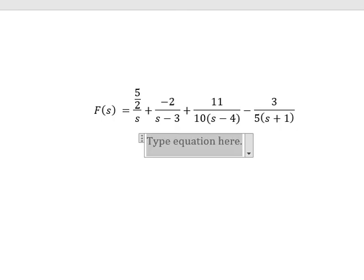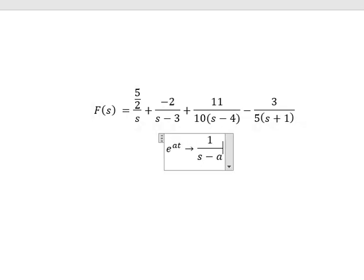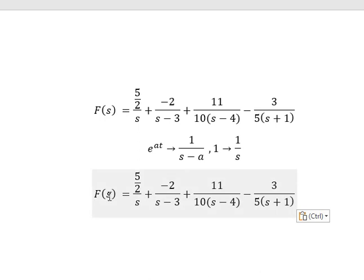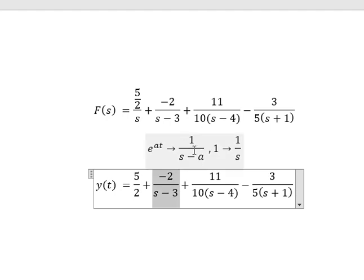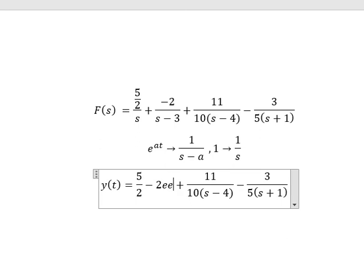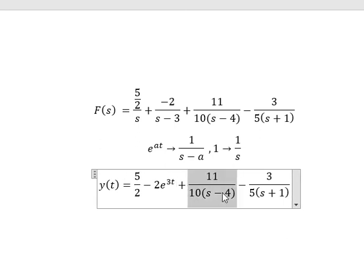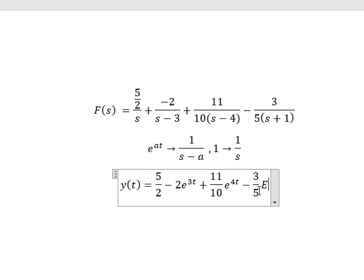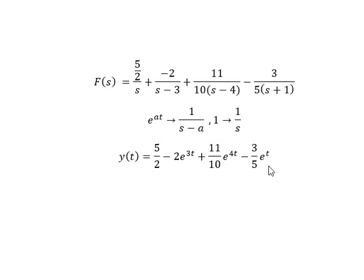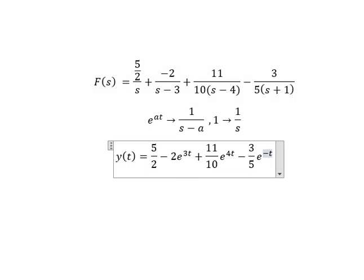Next, we do the inverse Laplace transformation. We apply the formula here. This one we have five over two, this one we have number three, so A equals number three. This one we have number four. And the last one — oh sorry, this is negative, because this is positive one, so that should be about negative one for A. This is the end. Thank you for watching.